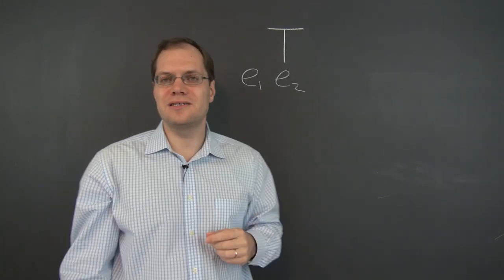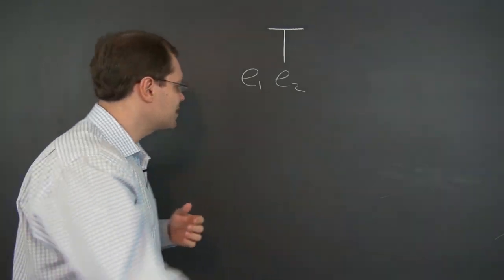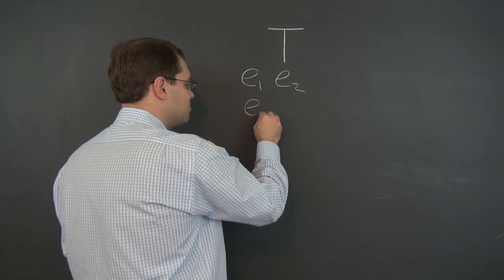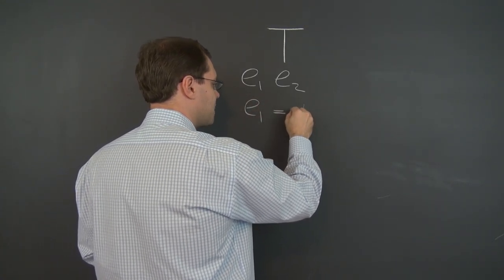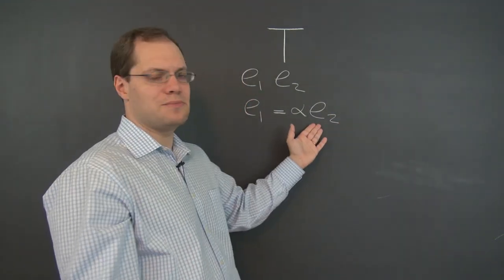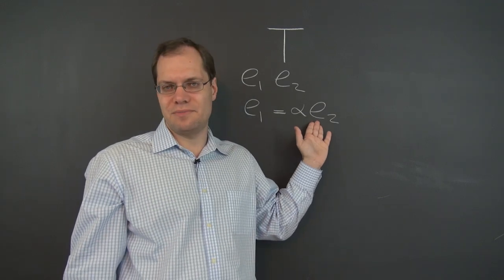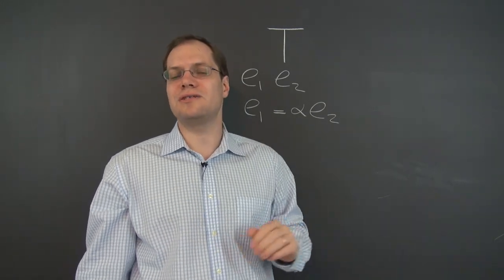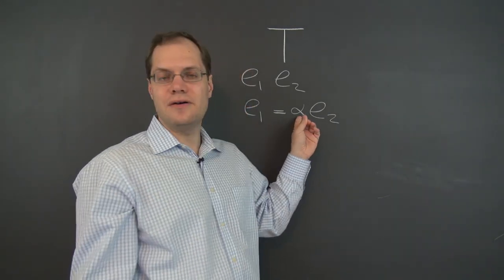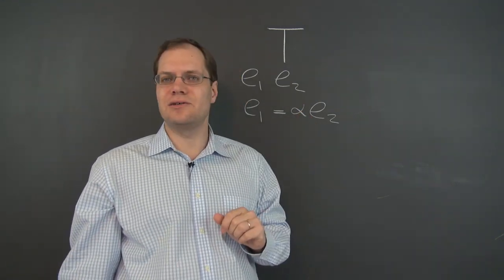Well for two vectors to be linearly dependent, one would have to be a multiple of the other. So let's write it down and see if we can push it into a contradiction. So if one is a multiple of the other, let's say it's E1 that's a multiple of E2. And remember that neither one of these vectors can be the zero vector. Those don't count as eigenvectors. So alpha cannot be zero. That's important.